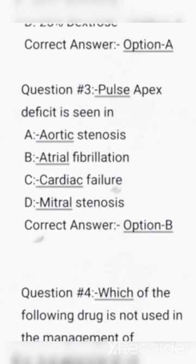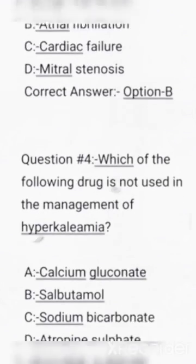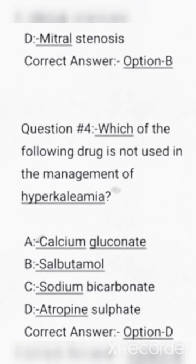Pulse apex deficit is seen in. Options are aortic stenosis, atrial fibrillation, cardiac failure, mitral stenosis. Correct answer: Option B, atrial fibrillation.